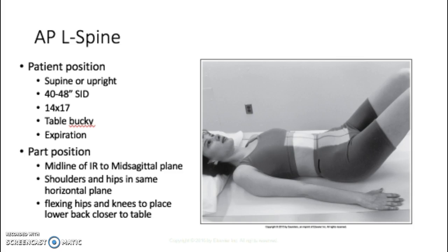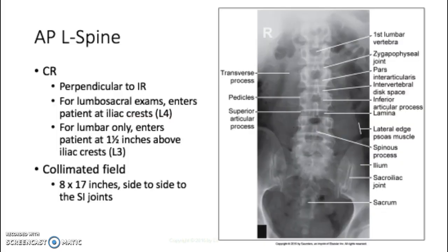Line the patient up in the middle of the image receptor using the mid-sagittal plane as your center line. Make sure the hips and shoulders are in the same horizontal plane — look from the head or foot of the table to confirm the patient isn't lying crooked. Have the patient bend their knees and flex their hips, as this helps open up the intervertebral disc spaces and is more comfortable on the table.